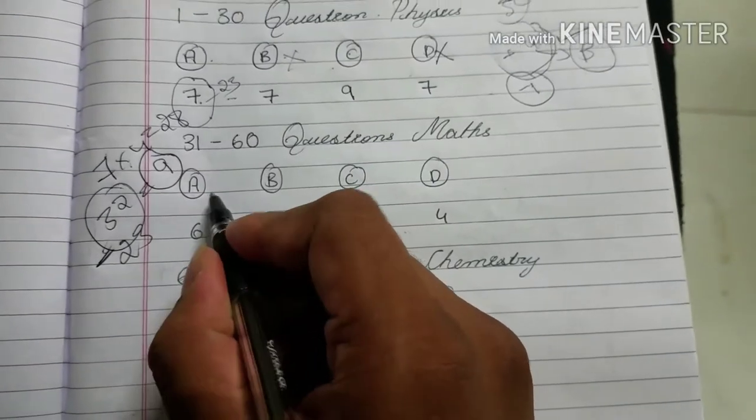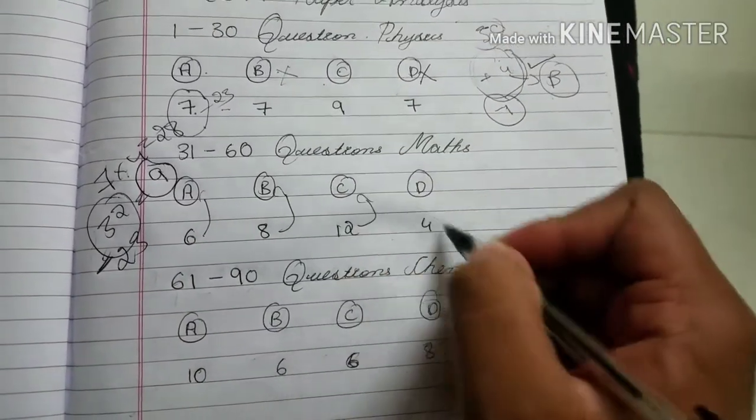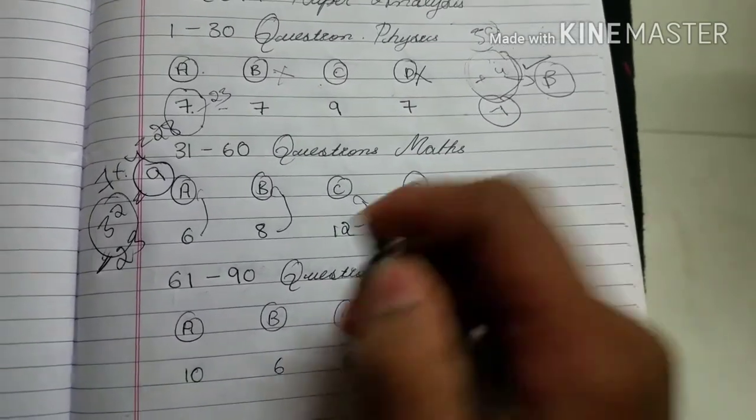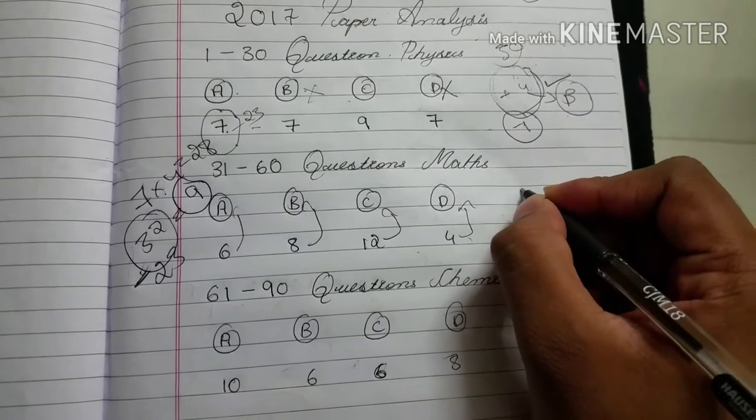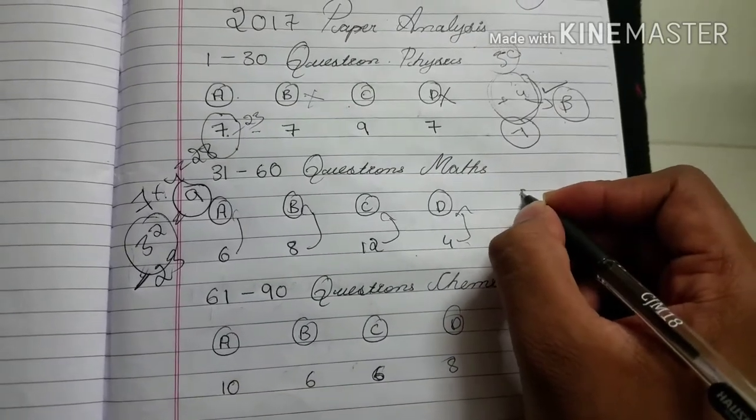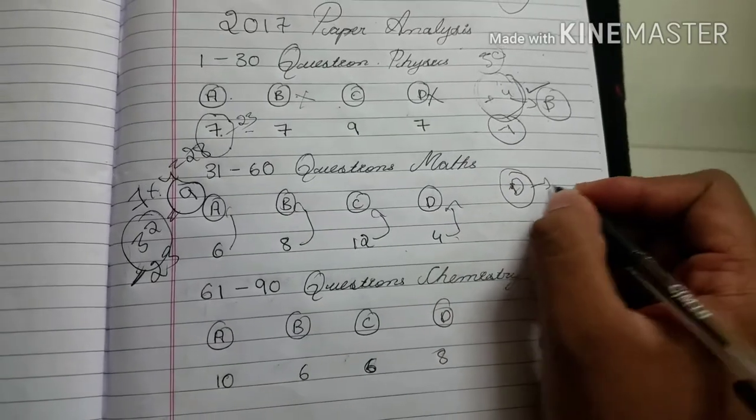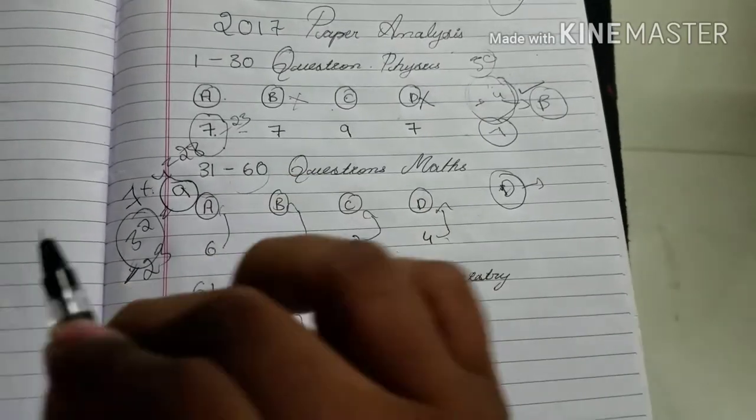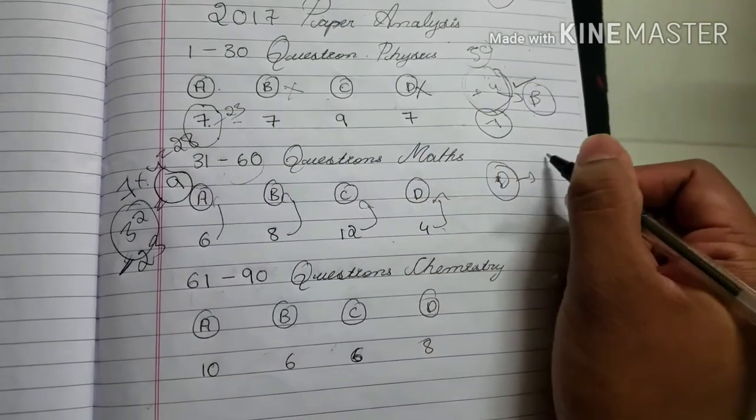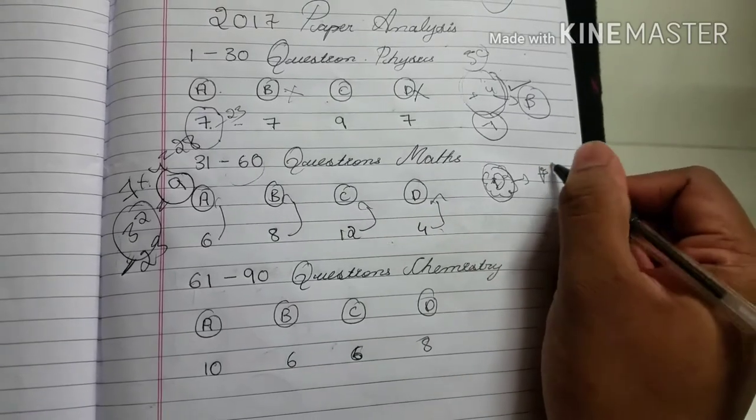In maths, 6 questions are A, 8 questions are B, 12 questions are C, 4 questions are D. In this option, if you get D as correct option, any one you might be knowing out of 31 to 60, any one perfect answer, you bubble that D option and you will get plus 4 marks.